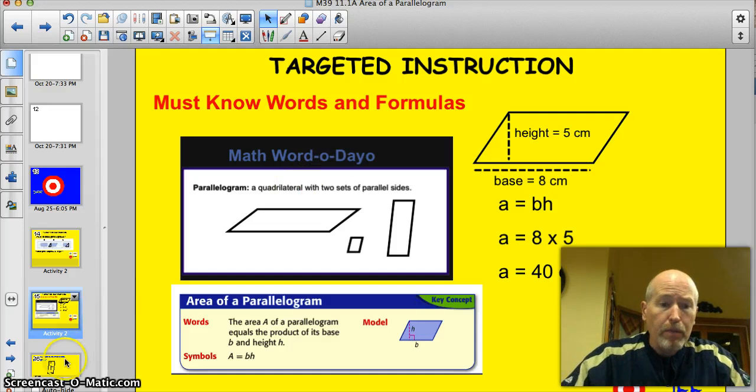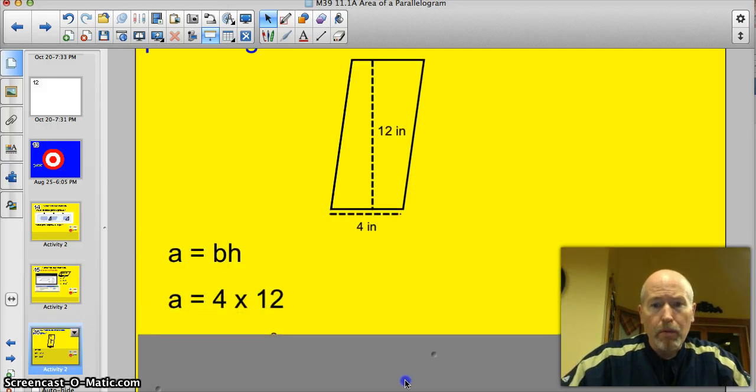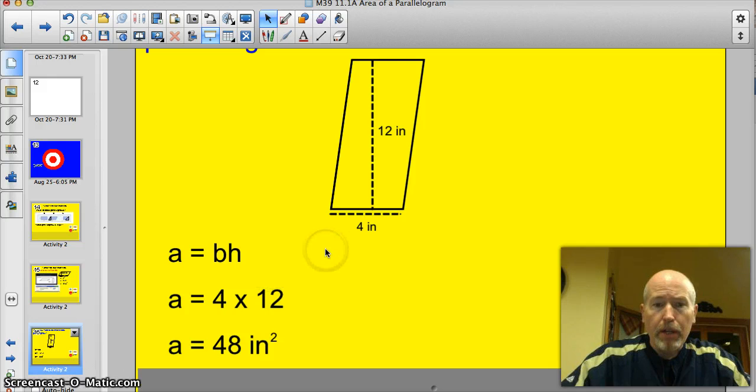All right, I have some examples for you. Go ahead and try these guys. What is the area of this parallelogram? Go ahead and pause it and figure it out. Okie dokie. Let's see how you did. Well, there's our formula. Area equals base times height. So the base is four. Height is 12. We have 48 inches. Did you remember to square it? Good.